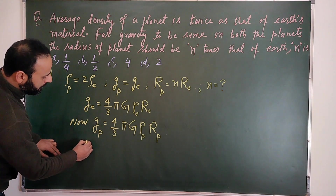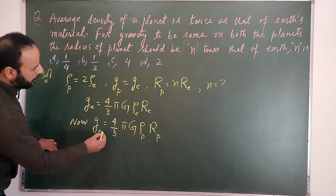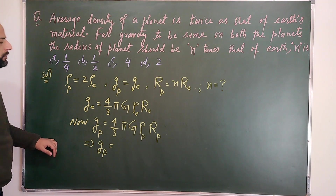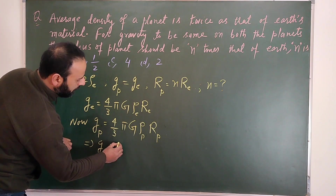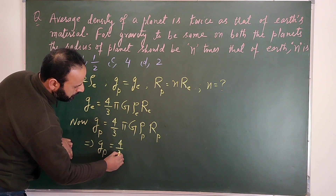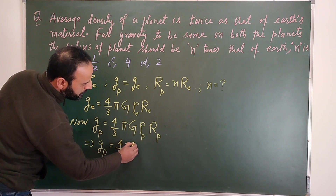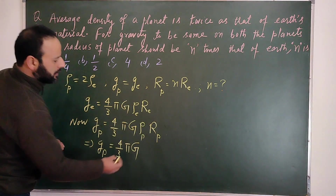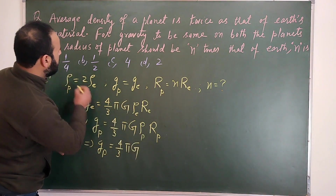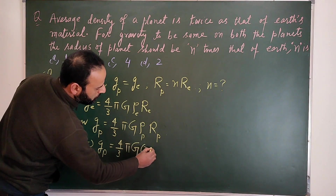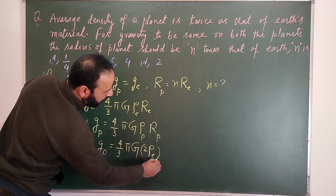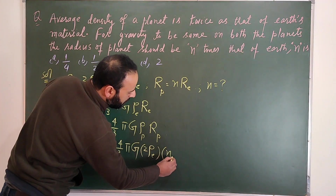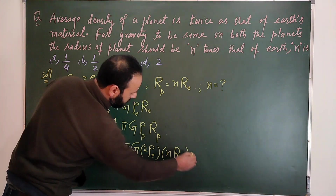Substituting the known values: gp = (4/3) π G × (2ρ_e) × (n R_e). The density of the planet is twice the density of the Earth, and the radius of the planet is n times the Earth's radius.